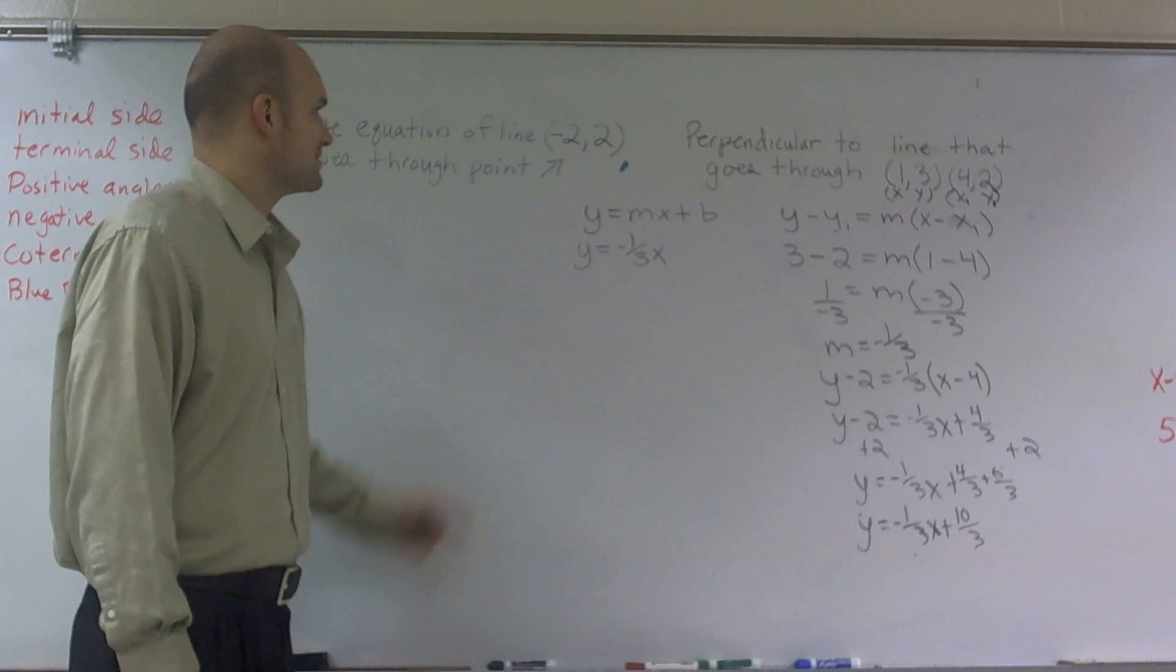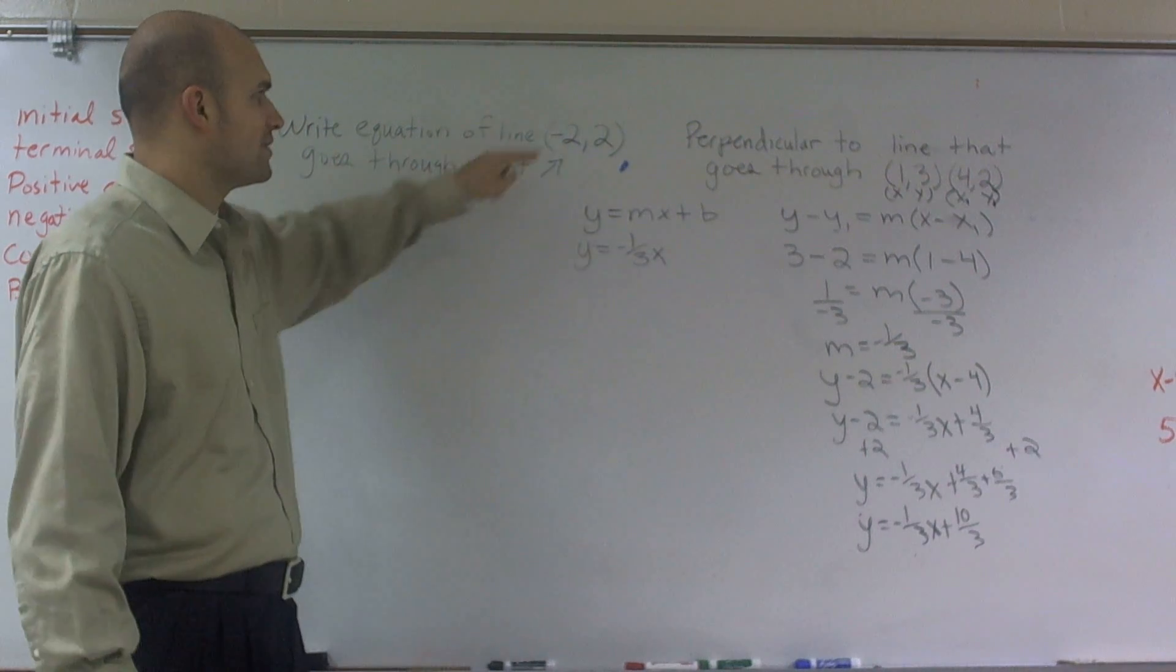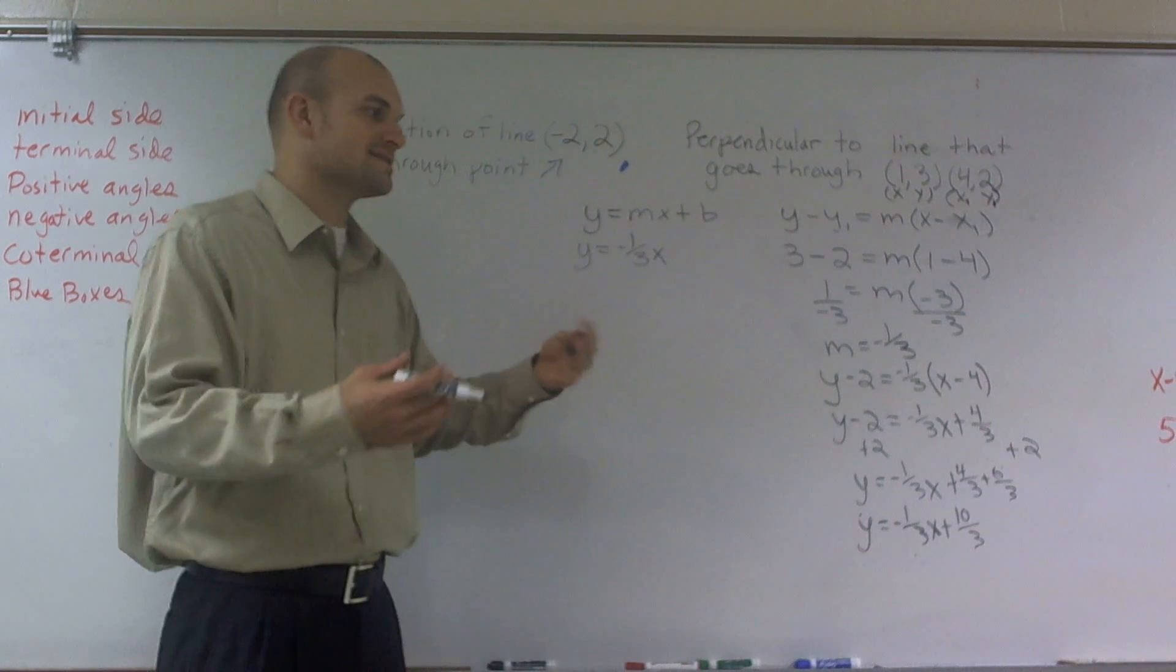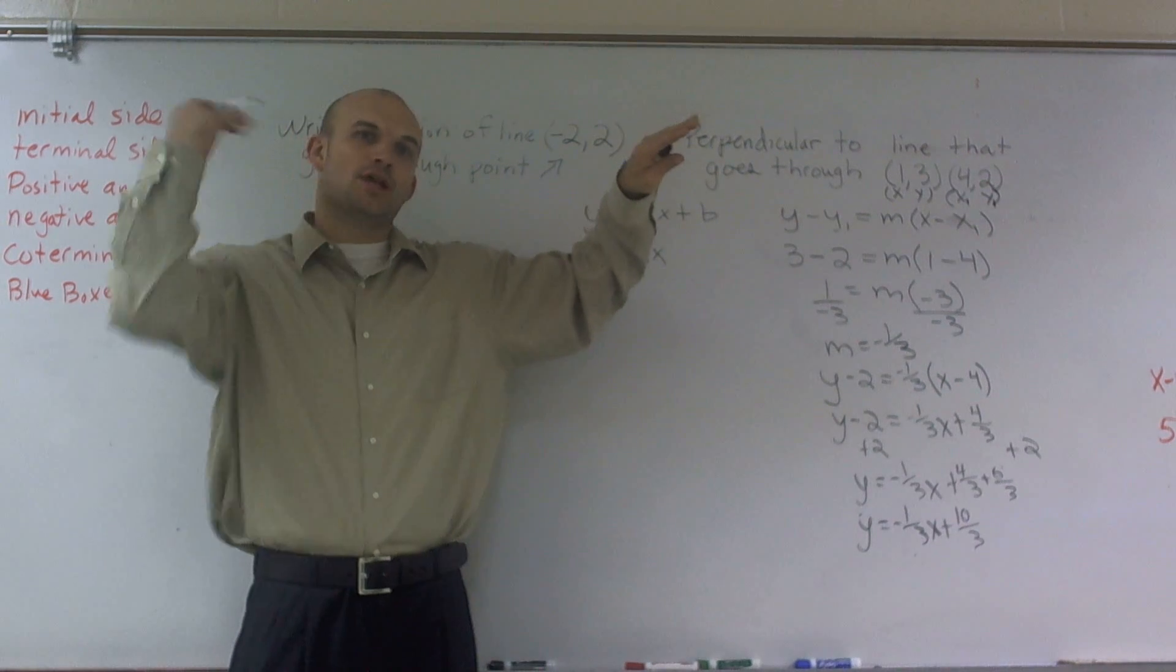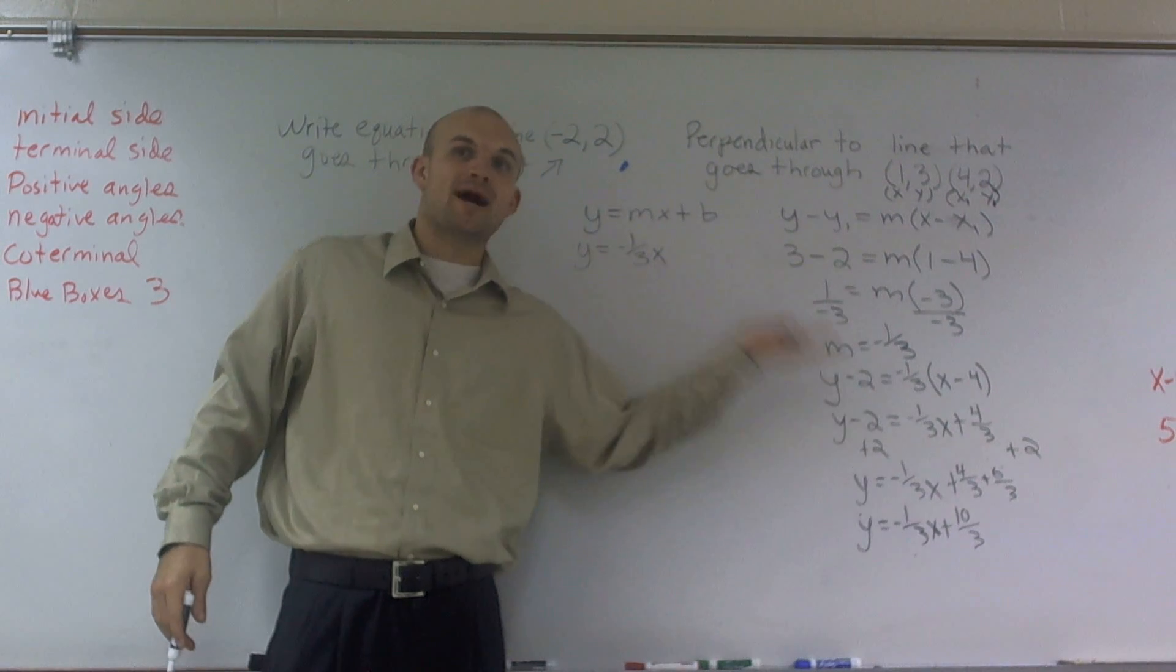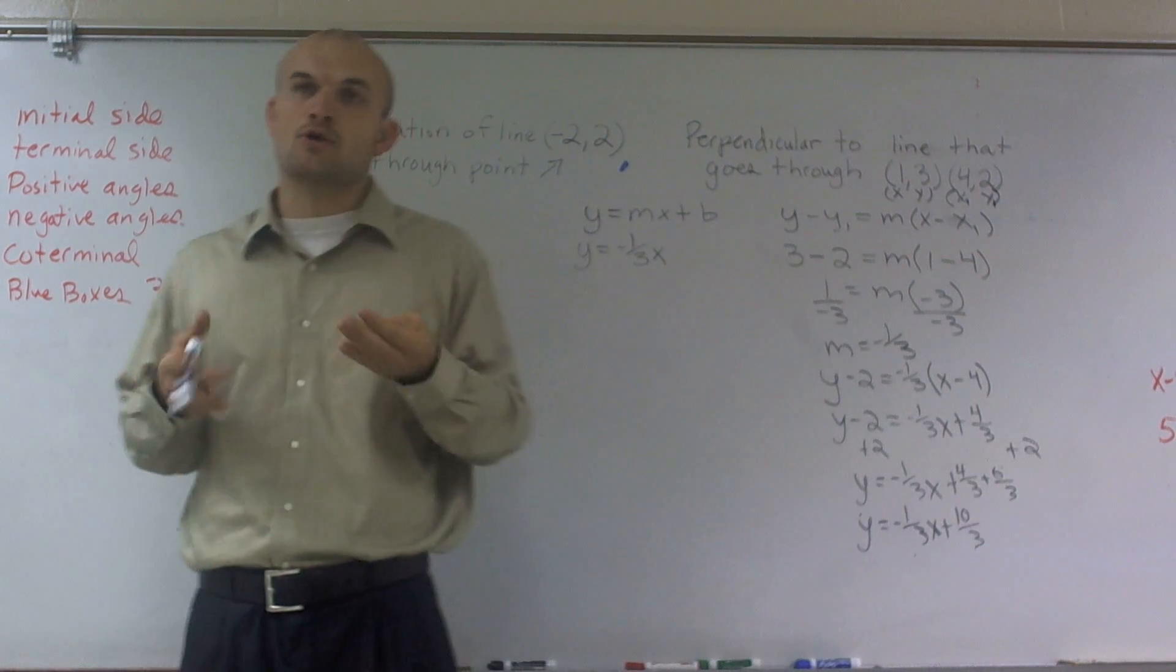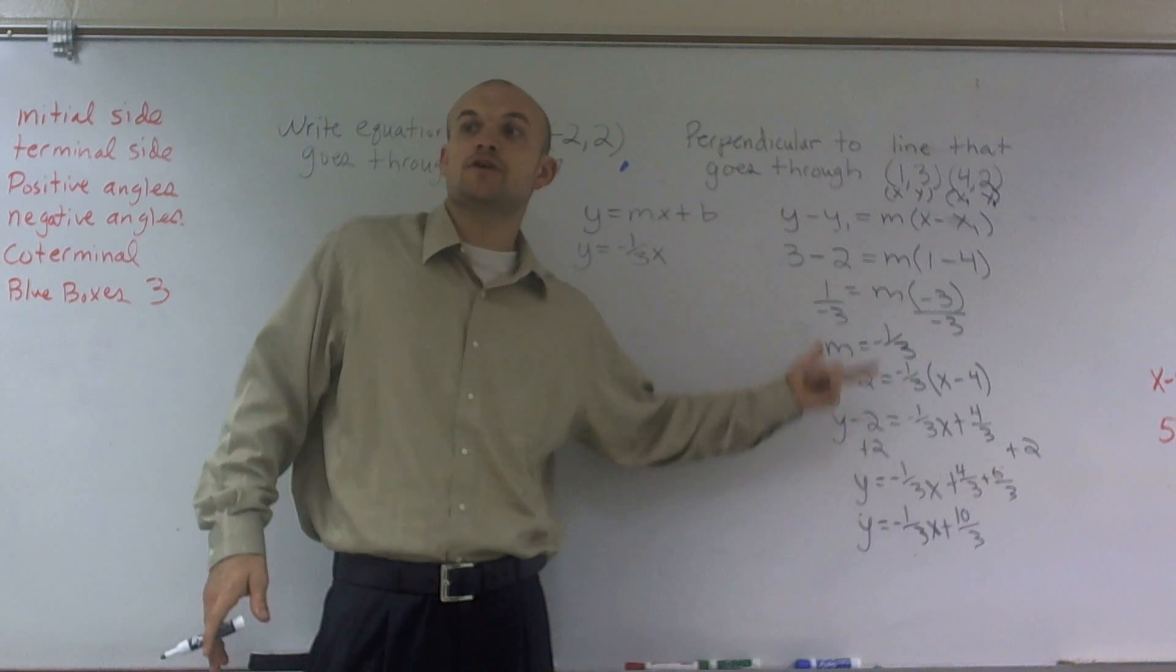So now we have that. Now what we have to do is write an equation of a line, negative 2 comma 2, that goes through the point. So now I want to find a line that's perpendicular to this. One thing you need to remember about perpendicular lines is they have opposite slopes. That means if one slope is positive, the other slope has to be negative. So since this slope is negative, now I'm going to have a positive slope. And the other thing is perpendicular slopes are reciprocals of each other. So if this is 1 third, my new slope is going to be 3 over 1.